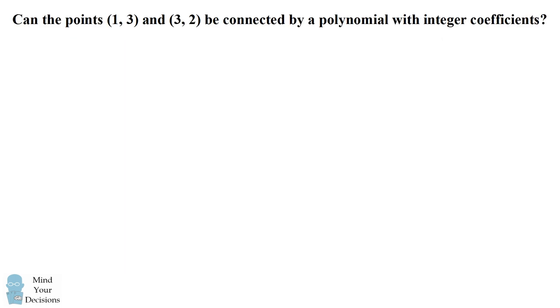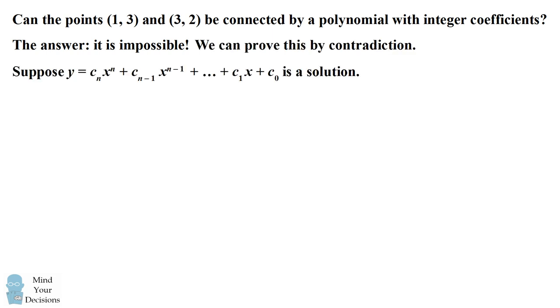So it would seem you should be able to find a polynomial that passes through these two points because you're not restricted to the degree of the polynomial. However, that turns out to be not the case. It is actually impossible to find a polynomial with integer coefficients that passes through these two points. We can in fact prove this by contradiction. So let's suppose we have a solution.